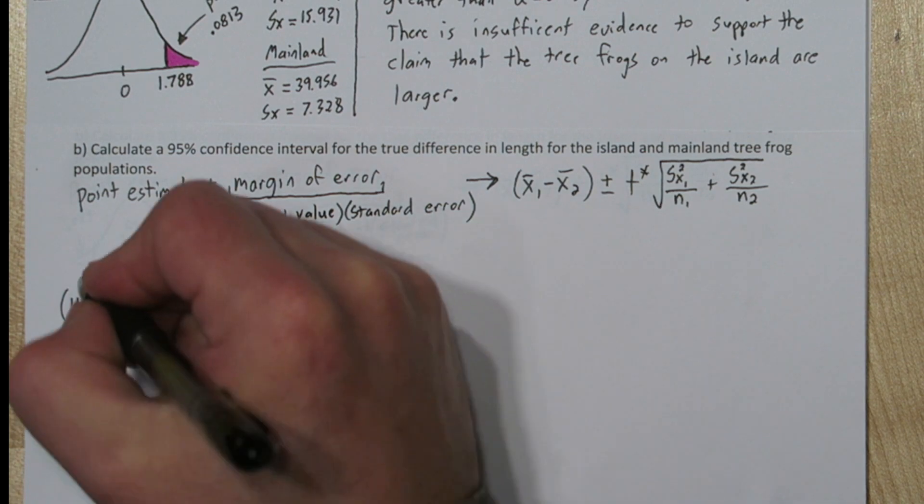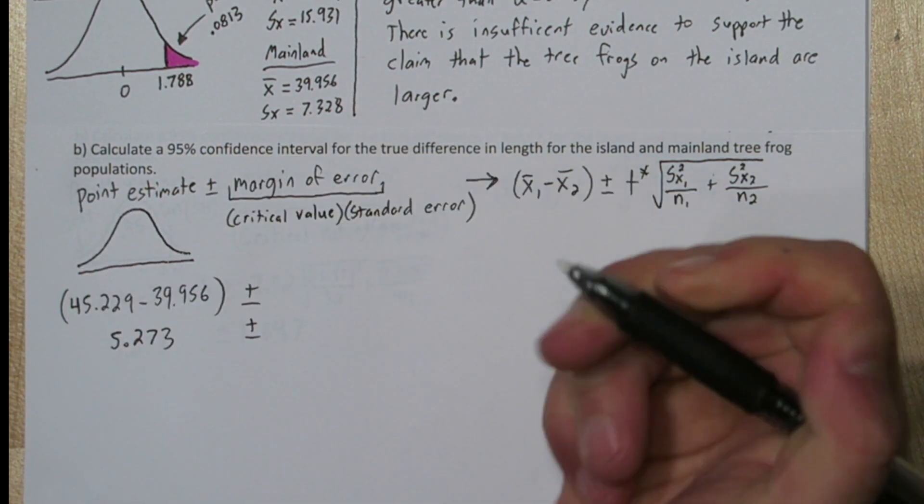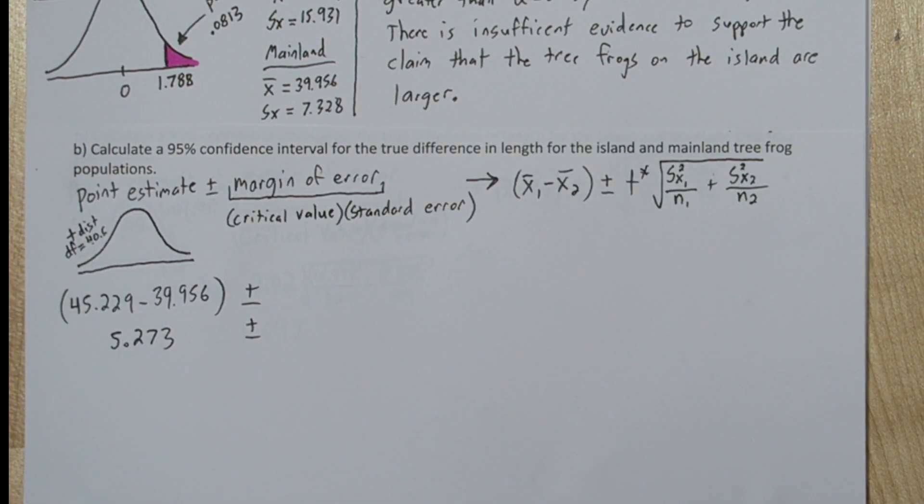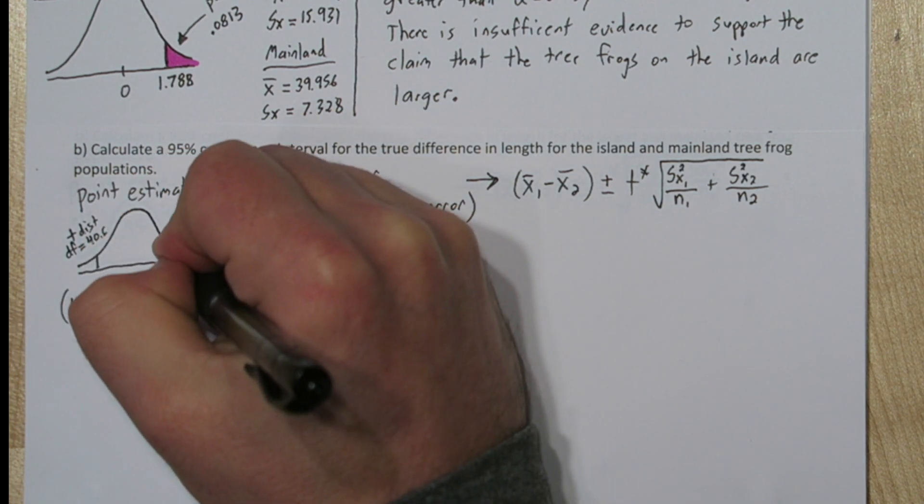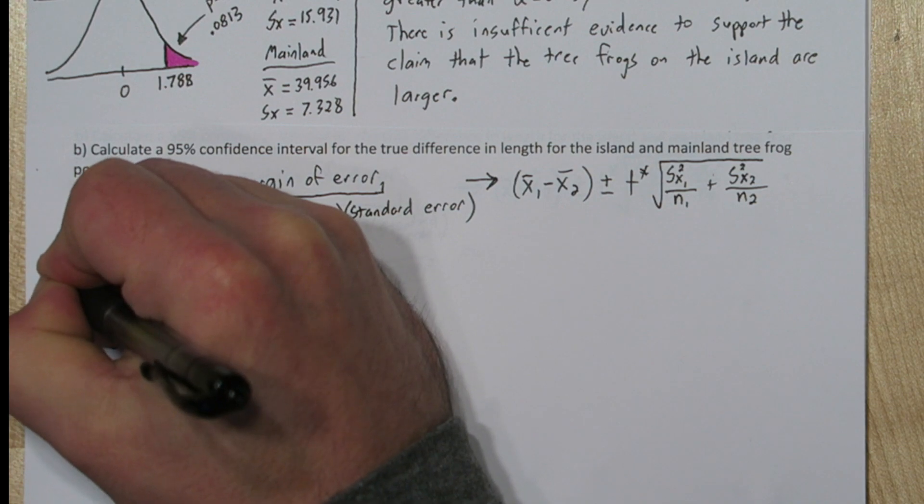Now to figure out T star, I'm going to draw a T distribution with 40.6 degrees of freedom. And I got that degrees of freedom from the output for the unequal variances. Now if we want to isolate the middle 95% of this density curve, that means there's going to be 2.5% in the tail.